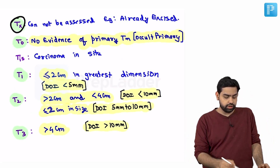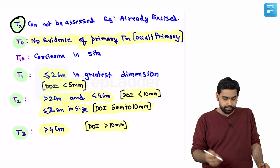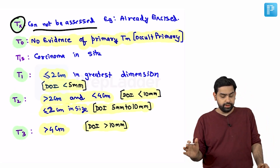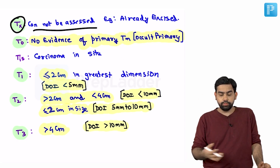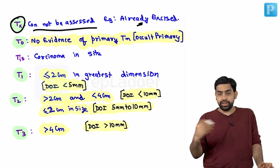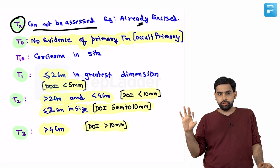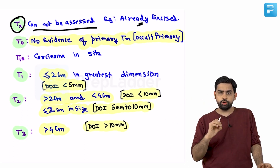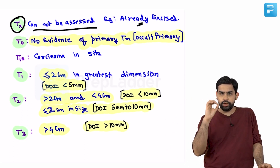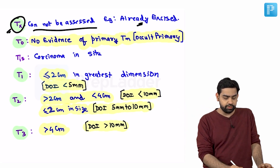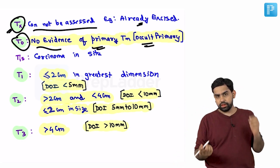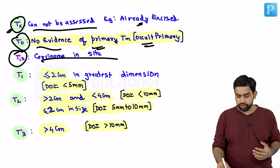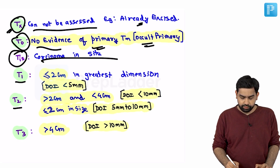TX is where the tumour cannot be assessed — maybe it is already excised or partially excised, or due to one reason or another you are not able to assess that particular T stage. That is when you give it as TX. T0 means there is no evidence of the primary tumour — that is occult primary.